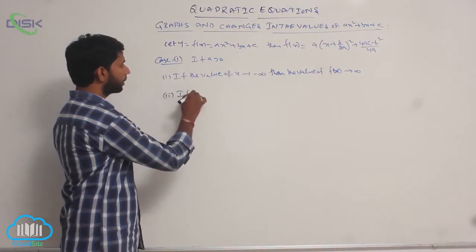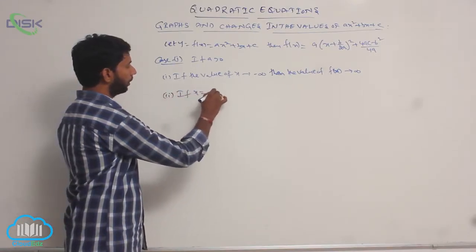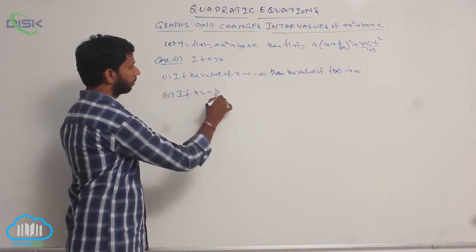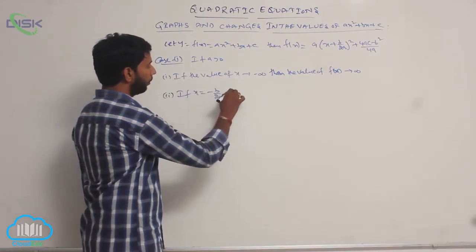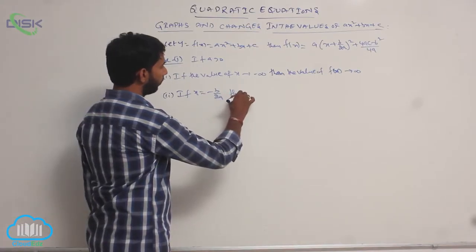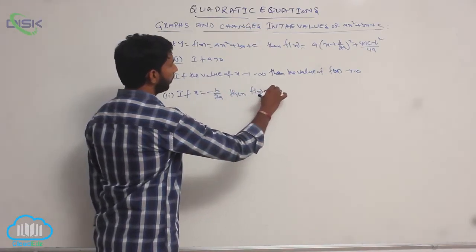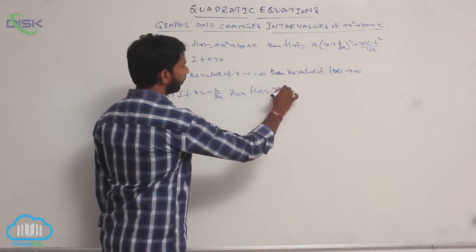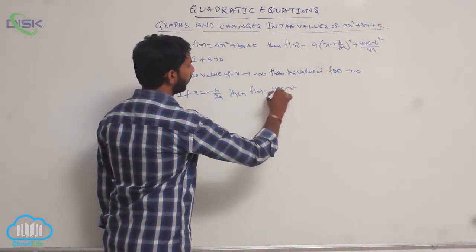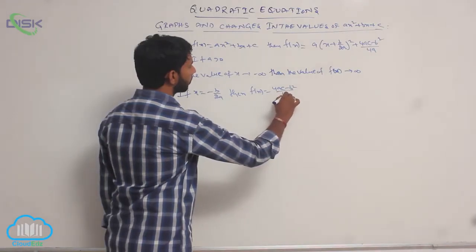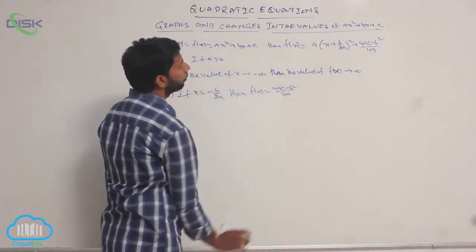If x = −b/2a, then f(x) = (4ac − b²)/4a.